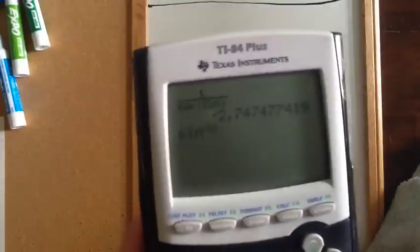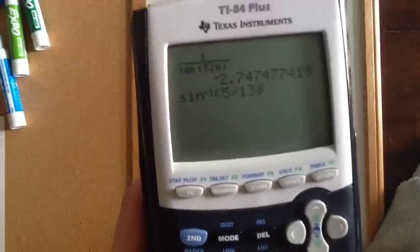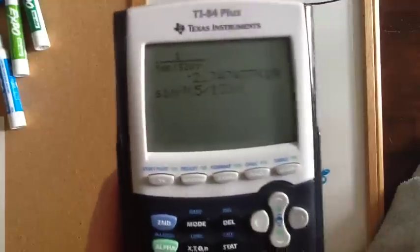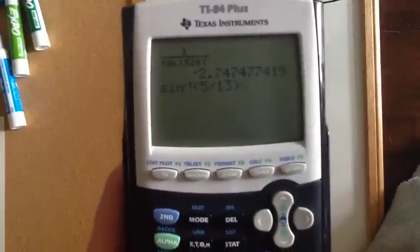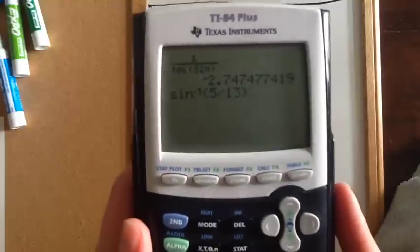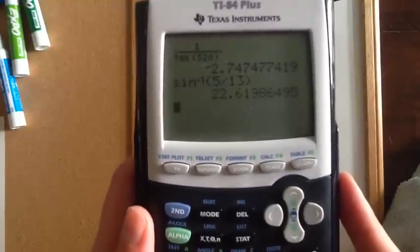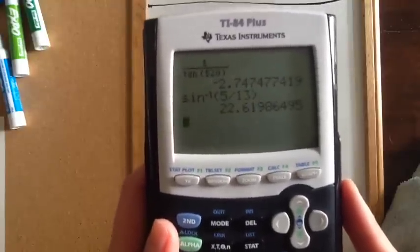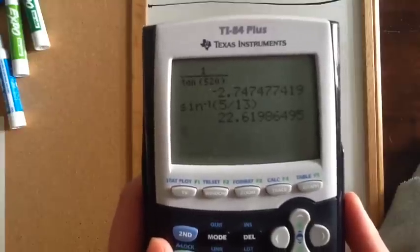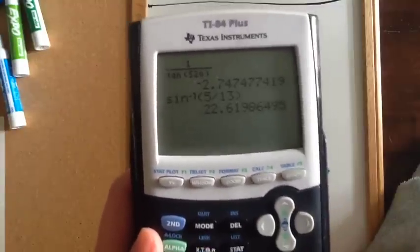So if I knew that the ratio was 5 thirteenths, meaning that the opposite side was 5, and the hypotenuse was 13, and I wanted to find the angle, then I would do that, and then I would know that the angle was 22.62 degrees. So that's the difference between those two.